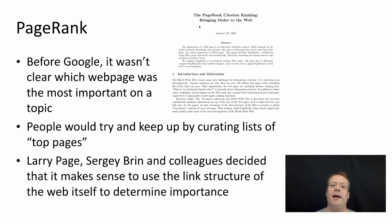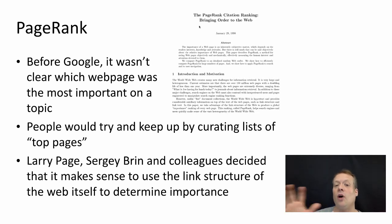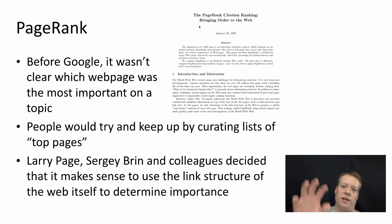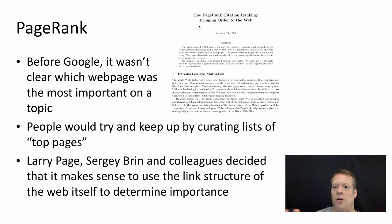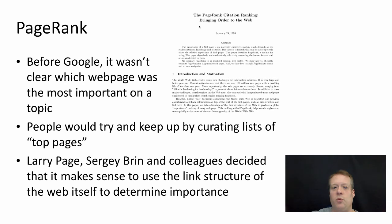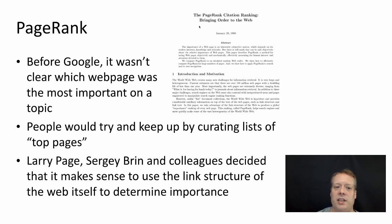Before Google, it wasn't clear which webpage was the most important on a topic. People would try and solve this problem by keeping a curated list of top pages. Yahoo used to do this — they had a very directory structure-oriented thing where you could say, "I want to find a good website about climate change," and you could go down to Earth Science and then to Science and see these websites listed. The problem with that is there were such a small fraction of websites that were actually listed, because it took manually entering and curating them.